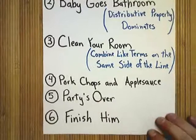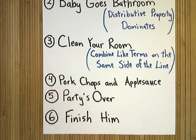The fifth step is parties over, which is if you have a party at your house, you'll have two types of people show up, your friends and your friends of friends. It's just a reminder to get rid of your friends of friends first. And finish him is the last step, which is the one-step equation that always ends a large multi-step.